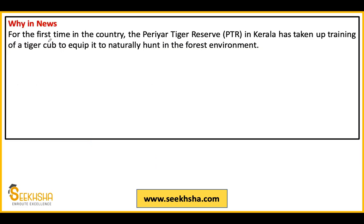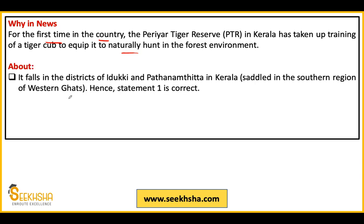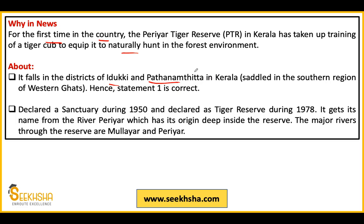Periyar Tiger Reserve was in the news because for the first time in the country, it is conducting a training exercise for tiger cubs in natural hunting within the jungle environment. The reserve is in Idukki and Pathanamthitta districts of Kerala, in the southern Western Ghats. It was declared a sanctuary in 1950 and a tiger reserve in 1978. It gets its name from the Periyar River that flows through it. The Mullayar River also passes through it. Fauna includes tigers, elephants, lion-tailed macaque, Nilgiri tahr, king cobra, and python.